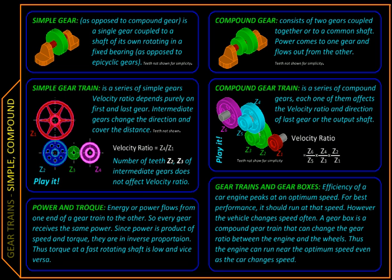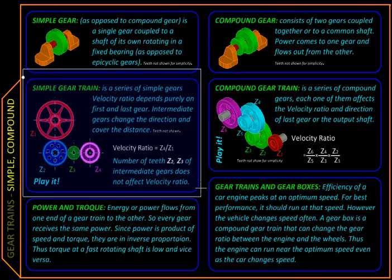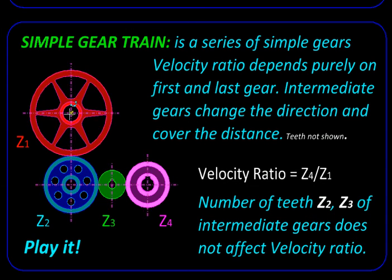In this video we will start taking a look at gear trains. Primarily we will be looking at three types: simple gear trains, compound gear trains, and epicyclic gear trains. Simple gear trains consist of single individually mounted gears whose axis of rotation are fixed in space. Here is an example of a simple gear train. As the name suggests, a gear train consists of a series of gears connected to each other forming a chain-like structure.